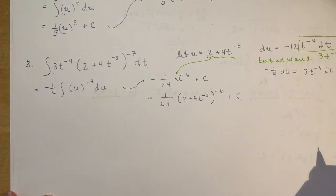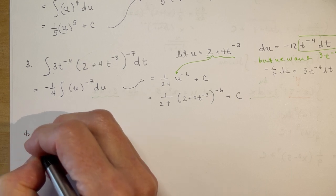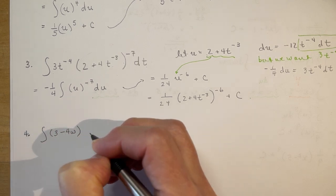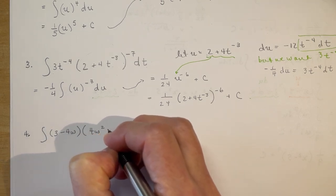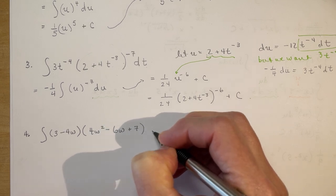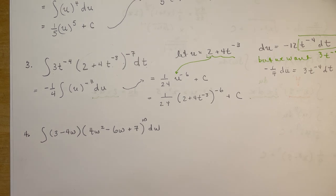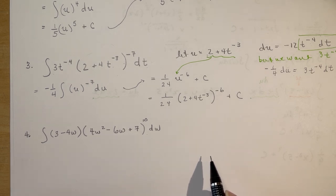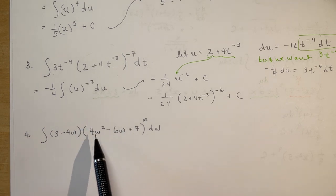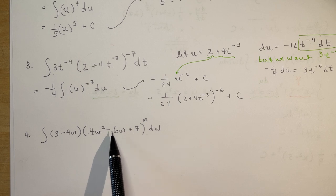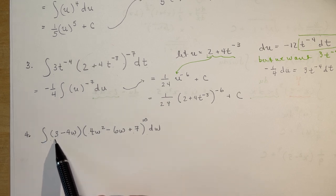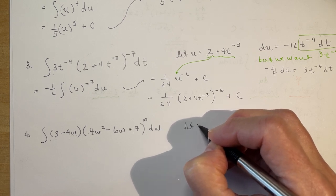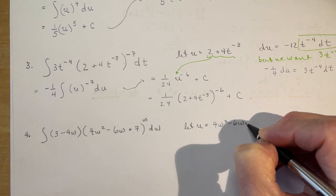And finally, I'm going to do another one that involves a little bit of help to make that du proper. So, we can do the proper substitution. So, it's the integral of 3 minus 4w in brackets times 4w squared minus 6w plus 7 to the power of 10 dw. Maybe you want to stop right here and try it on your own and then come back. So I look at this and I say, if I take the derivative of this, I would have 8w minus 6. Well, that's pretty close. It's double but negatively doubled. So, I can work with this. I'm going to let u be equal to 4w squared minus 6w plus 7.